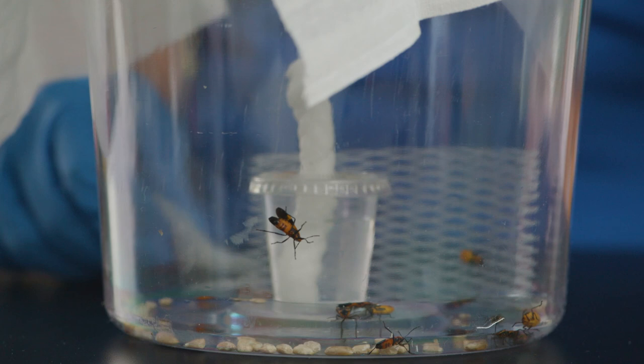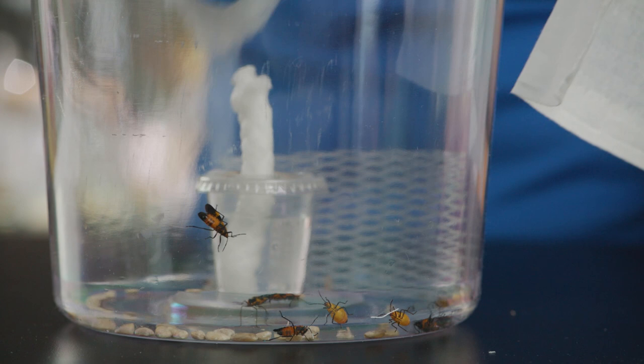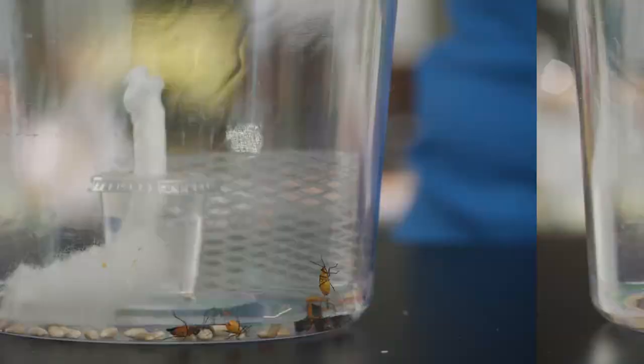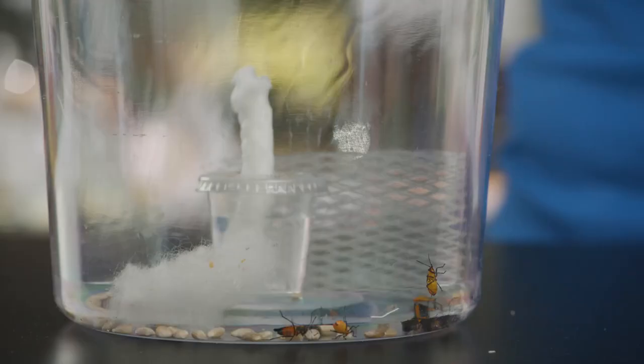The adult milkweed bugs will eat the eggs. To avoid this, remove the cotton daily and place it in a separate jar or container and replace it with unused cotton.